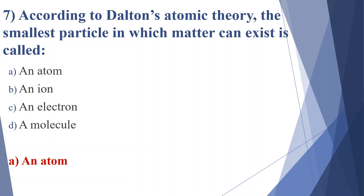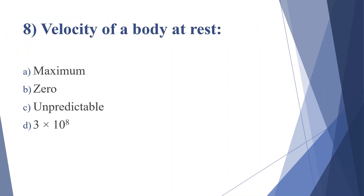Eighth question: velocity of a body at rest — option A: maximum, option B: zero, option C: unpredictable, option D: 3 × 10⁸. Answer is option B, zero.